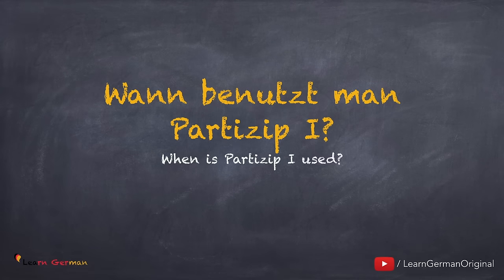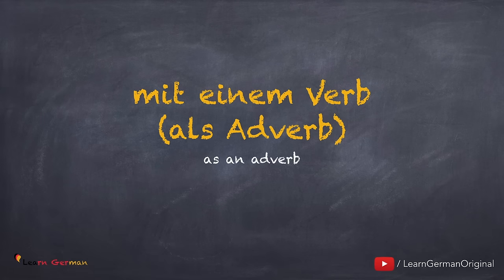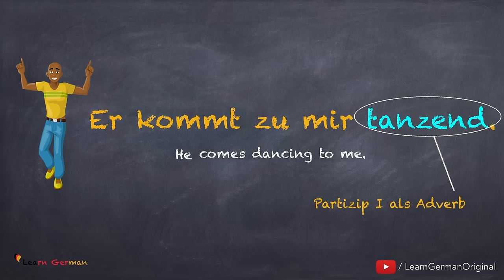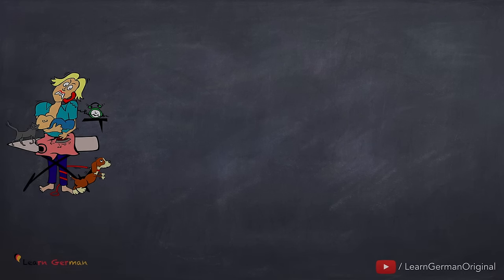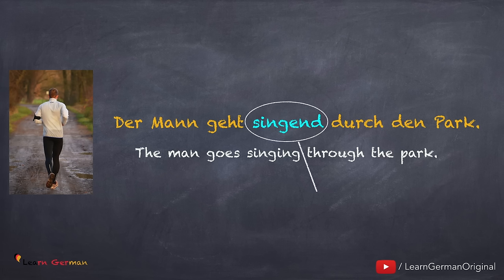Und jetzt lernen wir, wann benutzt man Partizip 1. Man benutzt Partizip 1 mit einem Verb als Adverb. Hier ist das erste Beispiel: Er kommt zu mir tanzend. In diesem Satz ist kommt das Verb und tanzend — mit D am Ende — ist das Adverb. Hier sind zwei weitere Beispiele: Sie hat mich weinend angerufen — weinend wird hier als Adverb benutzt. Und: Der Mann geht singend durch den Park. The verb is gehen and singend is the Adverb.